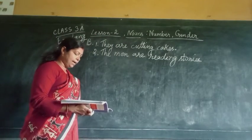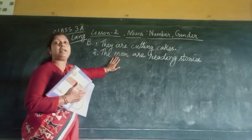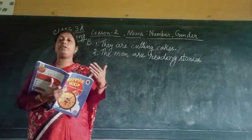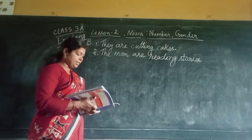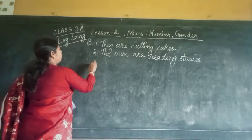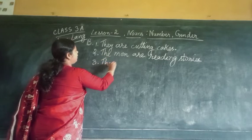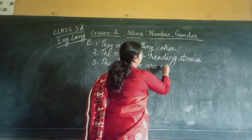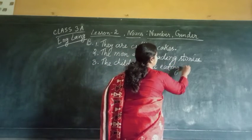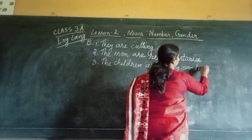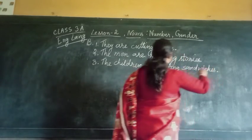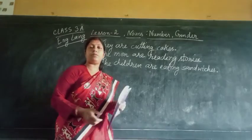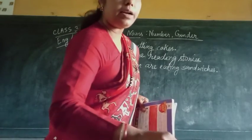Number 3: The child is eating a sandwich. 'Man' is an irregular plural. 'Story' is a regular plural — story changes into stories. So for number 3: The children are eating sandwiches. 'Children' is an irregular plural, and 'sandwiches' is a regular plural. Keep in mind which is irregular and which is regular.